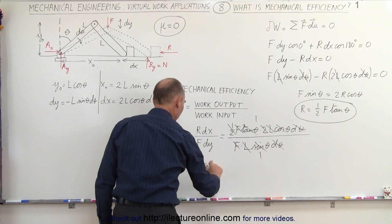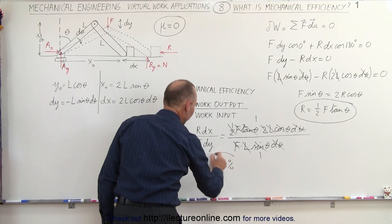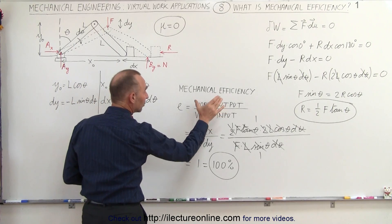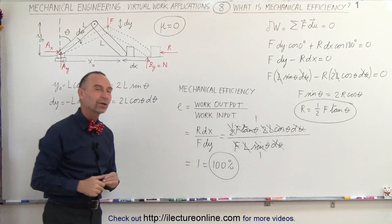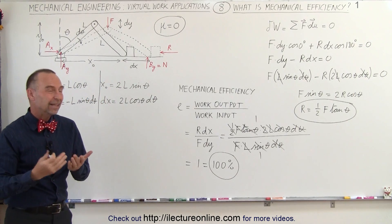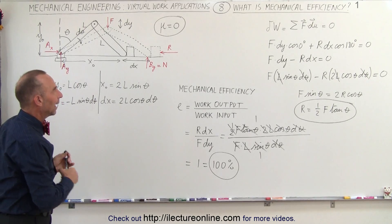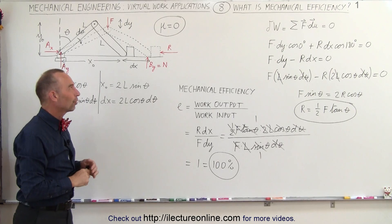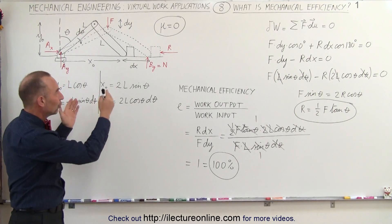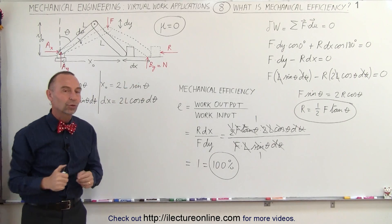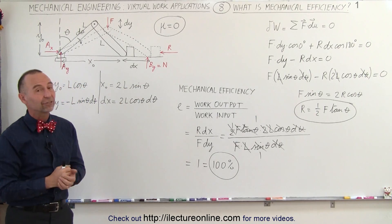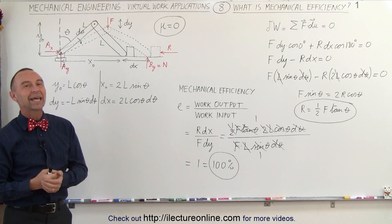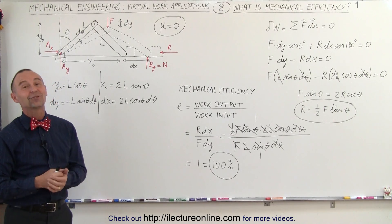In other words this equals 1, which is 100 percent. The efficiency of this action is 100 percent, meaning the work output equals the work input. We did this to show an example of how efficiency is calculated, in the case where the coefficient of friction equals zero — an unlikely scenario. Now let's do this again and introduce a coefficient of friction to see how the calculation changes. The mechanical efficiency will probably be less than 100 percent, and this is how mechanical efficiency is defined.